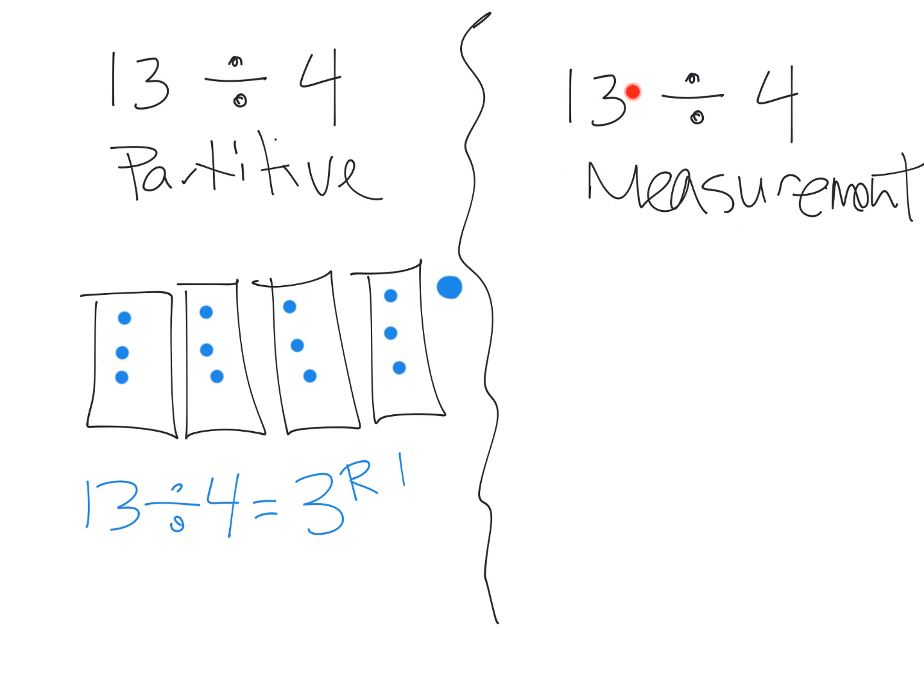Now we could look at this and do it as measurement, which is we're going to say let's put 4 in each group. So we'd say 13 divided by 4. 1, 2, 3, 4. That constitutes a group. Now let's do 5, 6, 7, 8. That constitutes a group. We're going to keep going. That's 8. So 9, 10, 11, 12. That constitutes a group.